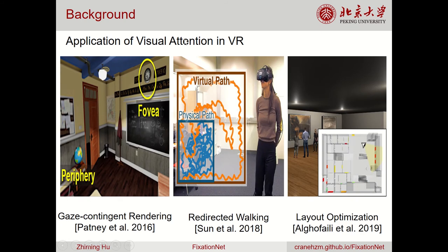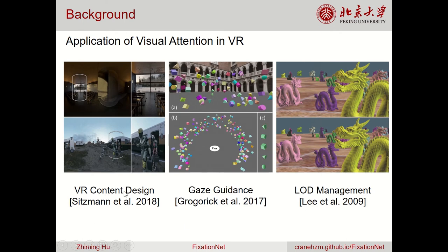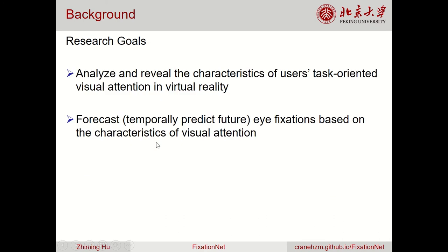In virtual reality, human visual attention can be applied to gaze-contingent rendering, redirected walking, layout optimization, via content design, gaze guidance, as well as error management. The research goals of this work are two-fold: analyze and review the characteristics of users' task-oriented visual attention in VR, and forecast eye fixations based on the characteristics of visual attention.